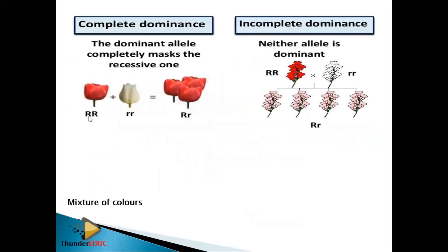Looking at examples: in complete dominance, the dominant allele completely masks the recessive one. For instance, crossing red and pink produces red — only one character appears in the offspring. In incomplete dominance, crossing red and white produces neither red nor white, but a new character — pink — because neither allele is completely dominant over the other.